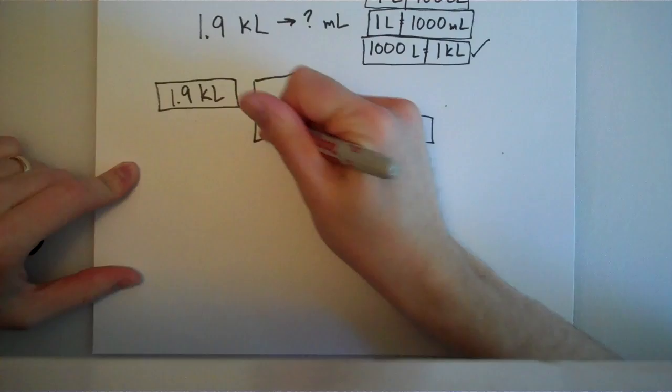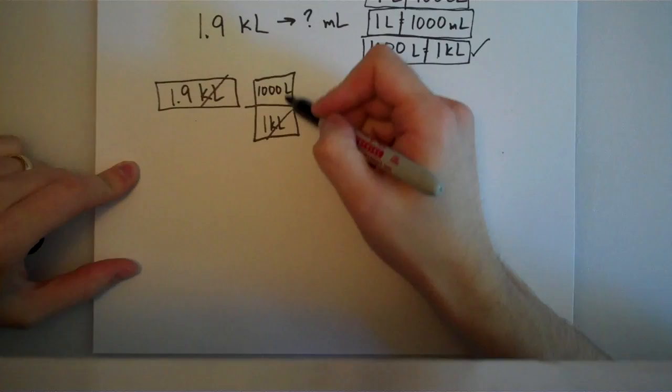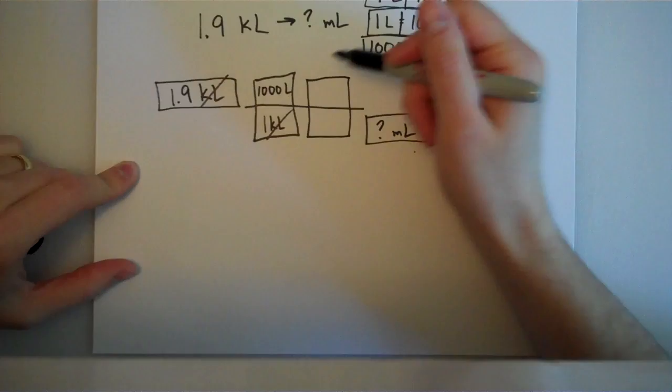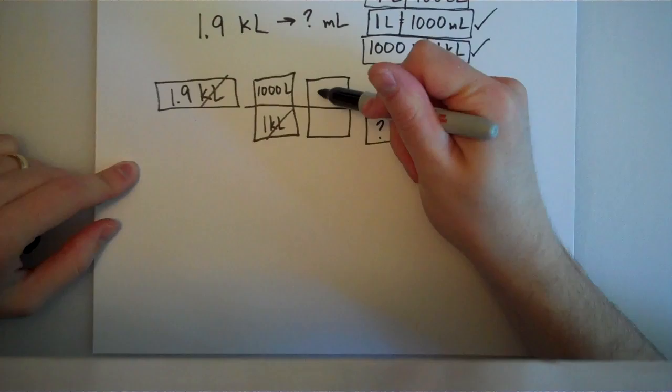I'm going to put the 1 kiloliter on the bottom, put 1,000 liters up top. Now, that cancels my kiloliters, which is great, but now I'm stuck with liters, and I need milliliters. So, I'm going to take this a step further and look for one that involves milliliters. This one right here is great because I can put 1 liter here and then 1,000 milliliters on the other side. Now, what would happen if I put the 1 liter up here on top?